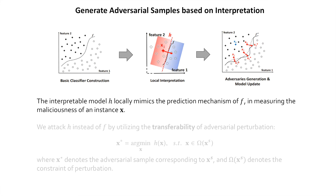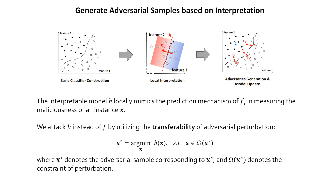According to the property of transferability, we attack the local model H instead of the original model F. The malicious score of the resultant adversarial instance is minimized under H. The adversarial attack is also subject to certain constraints related to the real-world cost or profit loss, depending on the application scenario.